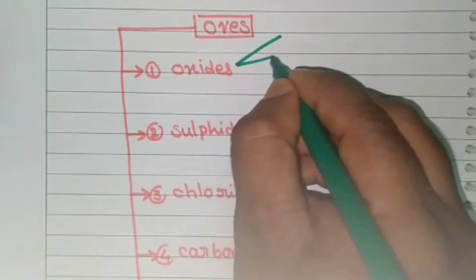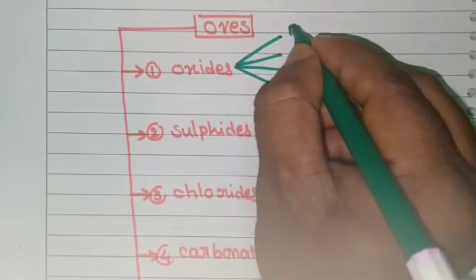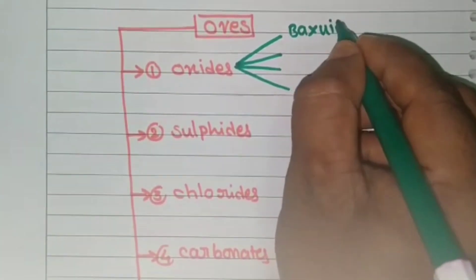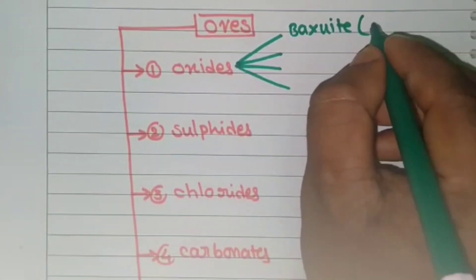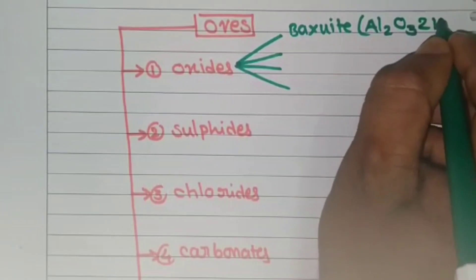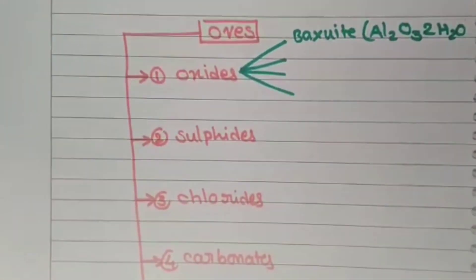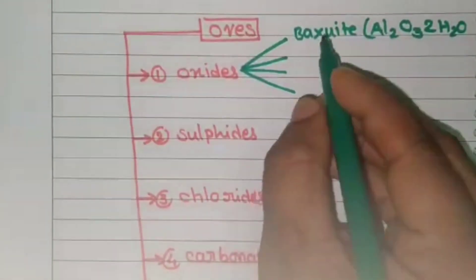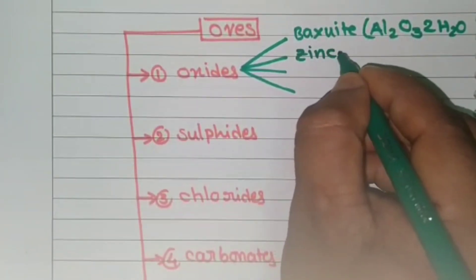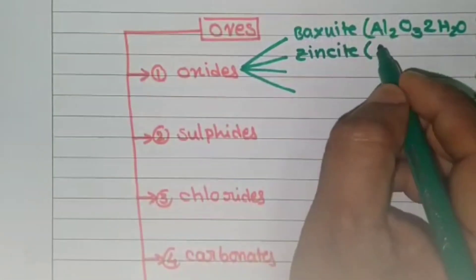Let's see examples given in our textbook. First, for oxides — the first example is bauxite, which is very important. The chemical formula of bauxite is Al2O3·2H2O. The second oxide example is zincite — the pronunciation and formula are both very important. Zincite has the formula ZnO.